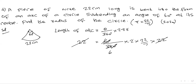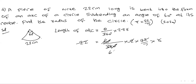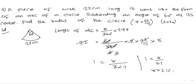After cancellation, 1 equals r divided by 21. Therefore r equals 21 centimeters. So the radius of the circle is 21 centimeters.